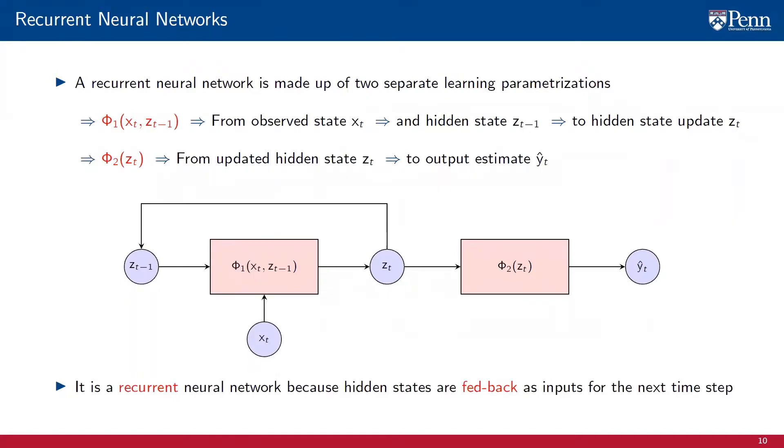This architecture receives the name recurrent because the hidden states are fed back as inputs for the next time step. This recurrence of the hidden state allows the RNN to encode past information it receives from the data points seen so far in a manner that circumvents memory growth.